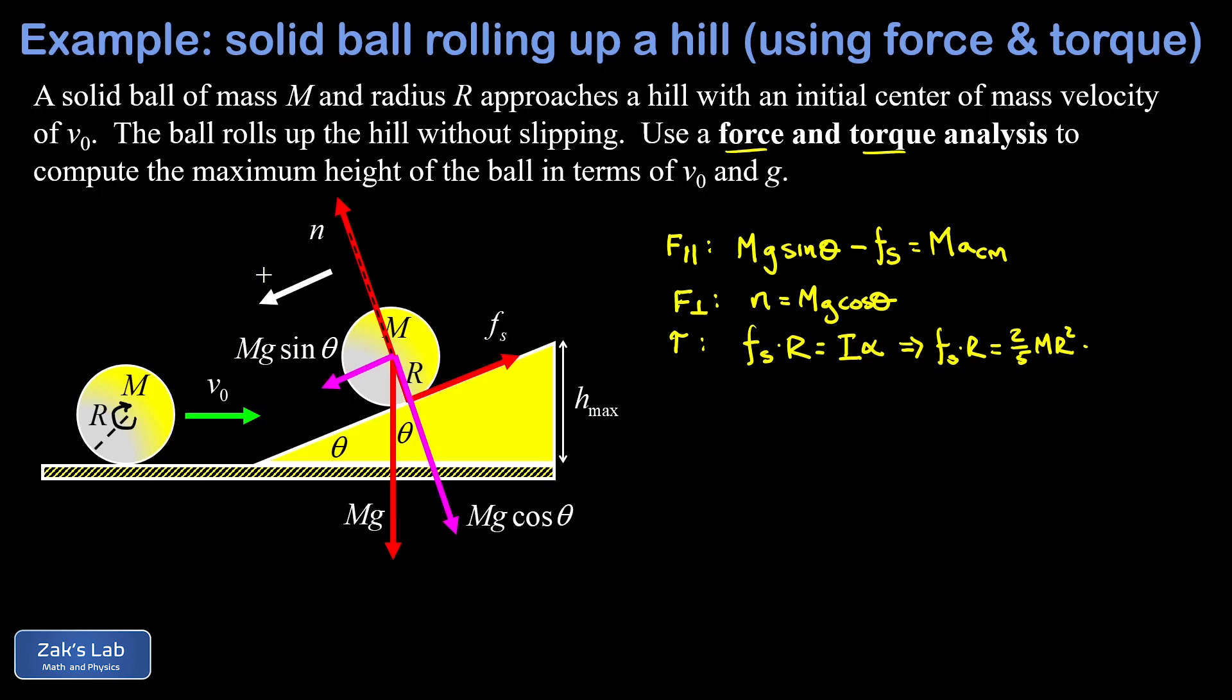Second, the angular acceleration is related to the center of mass acceleration for something that's rolling without slipping. This is just the first derivative of the common formula v = Rω. In other words, a = Rα or α = a/R. So I end up with a center of mass acceleration divided by the radius of the ball.